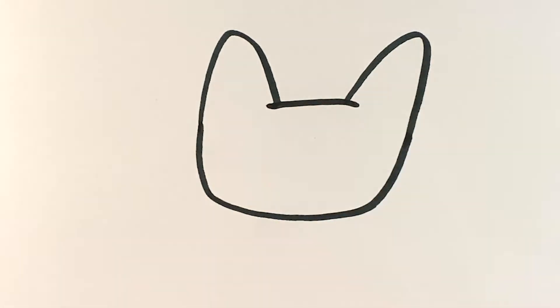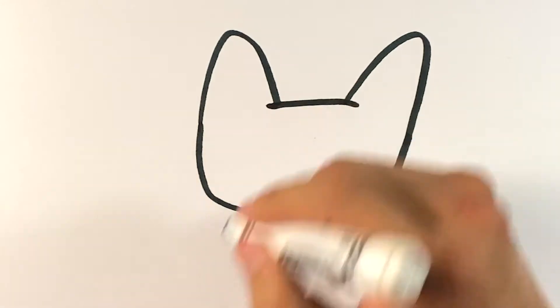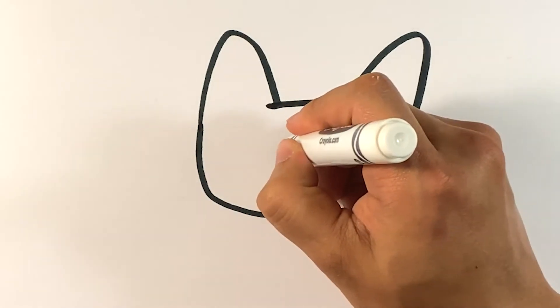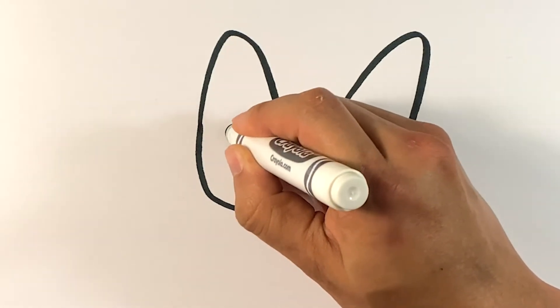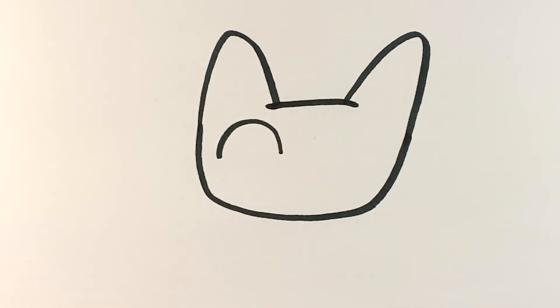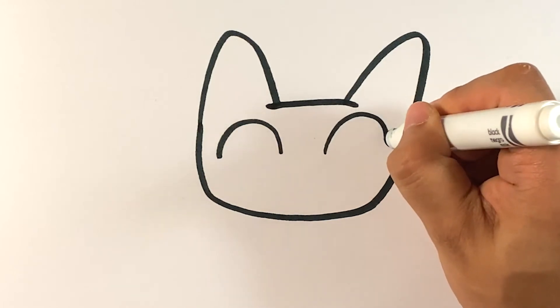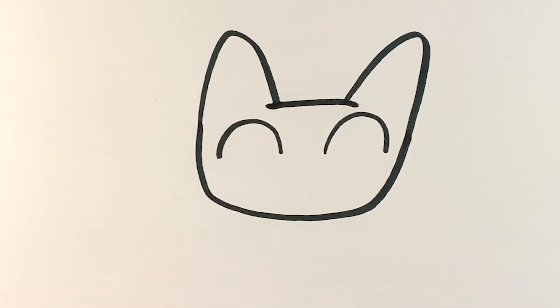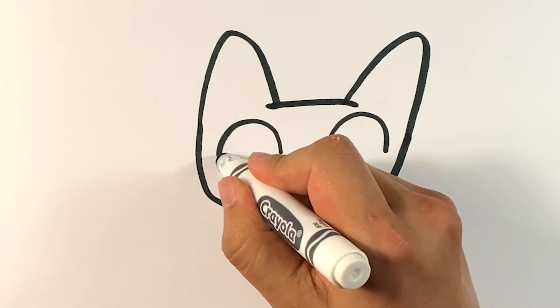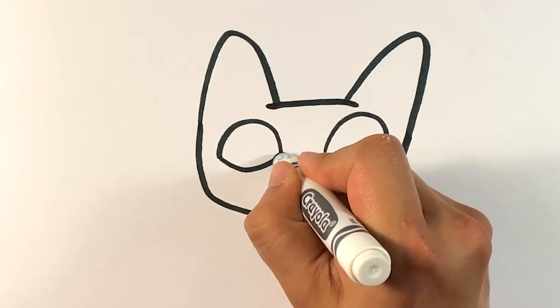And now we're gonna draw the fire part, right? So we're gonna go over here, curve for one cat eye. Do the other one over here, just kind of copy that. Just like an upside down U, that's all it is.